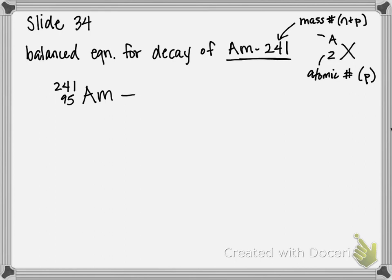Americium-241 is undergoing alpha decay, so it's changing into some other element that we'll have to figure out, plus alpha particles. The symbol for alpha particles is 4 over 2 He. An alpha particle, as covered in the PowerPoint, is just a helium nucleus — the 4 corresponds to helium's mass number, and the 2 corresponds to the number of protons it contains.